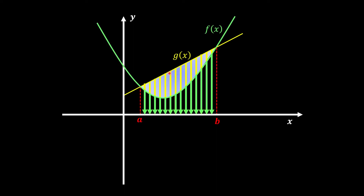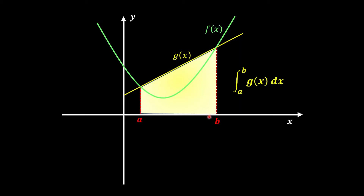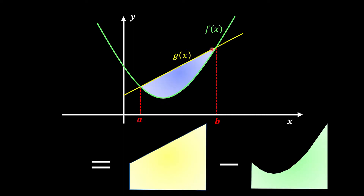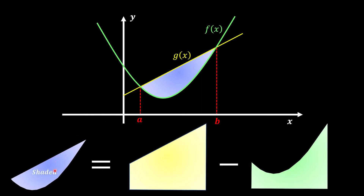The idea is we're going to find the area under the line first, by using integration of the straight line function from a to b with respect to x, and then minus off the area under the curve from a to b with respect to x as well. This works because if we take the area under the line minus the area under the curve, we will be left with the area bounded here. So the shaded area is going to be the area under the line minus the area under the curve.